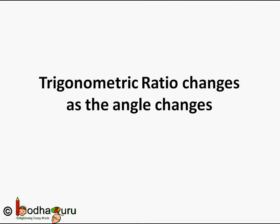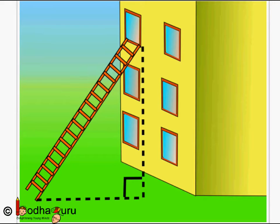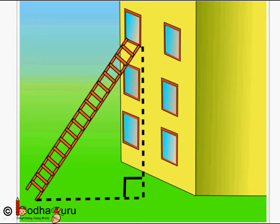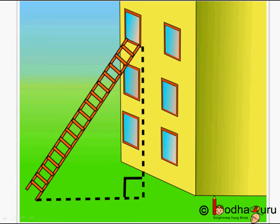Hello friends. In our previous videos we learned about various trigonometric ratios and how to use trigonometric ratios in different real life problems. Here is one more problem — a ladder resting on a wall. We can use trigonometry to find how high we can reach on the wall using this ladder.